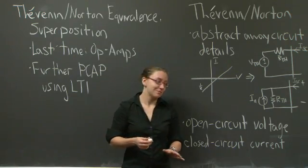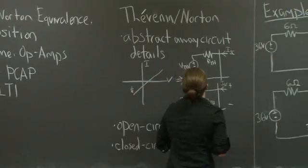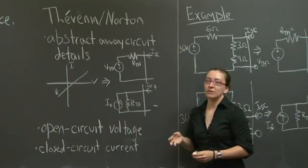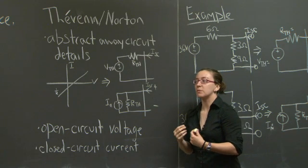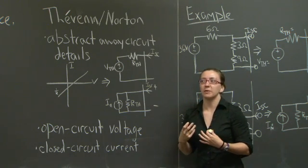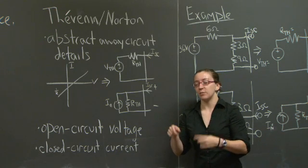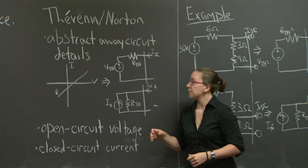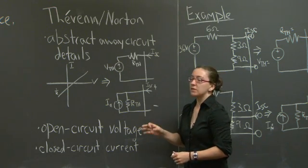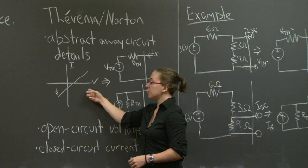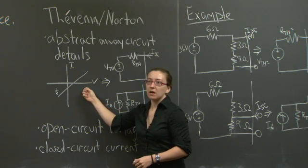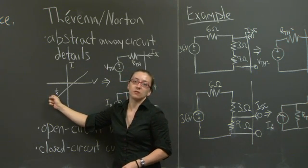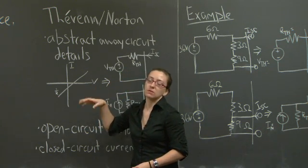At this point, I'll walk you through both. Thevenin and Norton equivalents is an important concept in that you may have a very complicated circuit and you don't really want to talk about the entire complicated circuit. You just want to sample the voltage drop or current in a very particular location. Because we're dealing with LTI systems, we can actually express that particular sample as its relationship between I and V and possibly whatever resistive component is associated with the voltage drop across that sample.